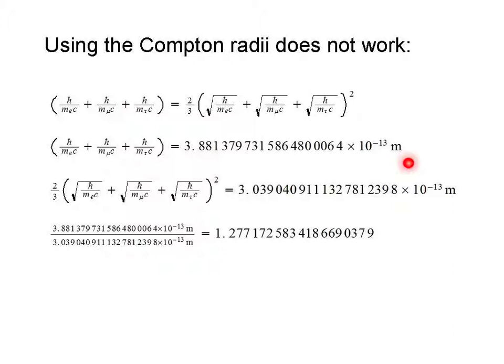The second half here, if we plug in our values for the reduced Compton wavelength of the electron, muon, and tau, we get about 3.039 times 10 to the minus 13th meters. These are not equal. They're off by a ratio of about 1.77.